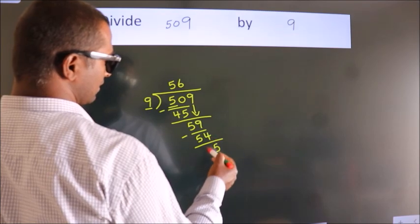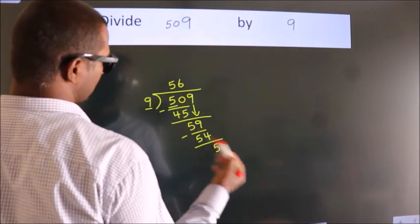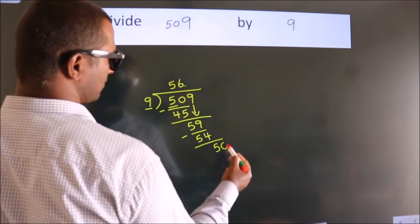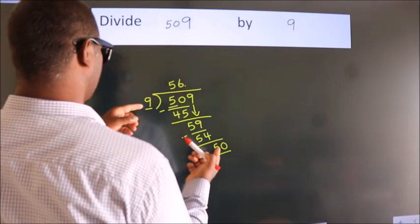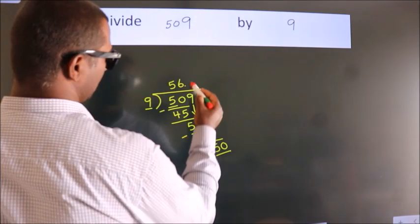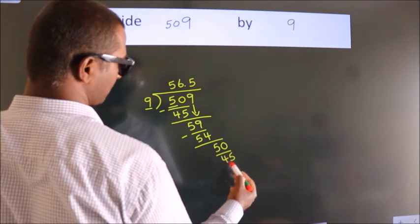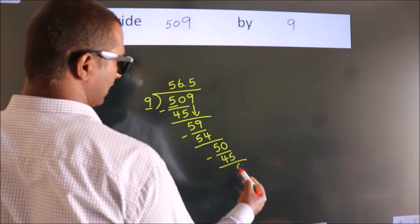After this, there are no more numbers to bring down. So what we do is put a dot and take 0, so 50. A number close to 50 in the 9 table is 9 fives, 45. Now we subtract and we get 5.